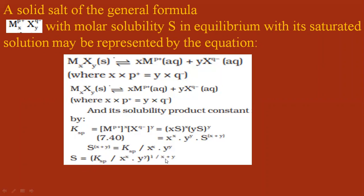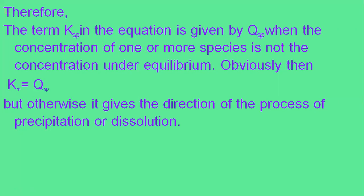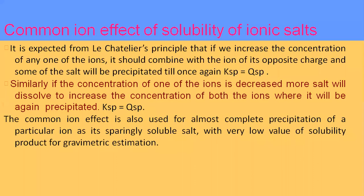When the concentration of one or more species is not at equilibrium, Ksp equals Qsp — where K is the solubility product constant and Q is the reaction quotient, a concept from previous topics. The comparison of Ksp and Qsp gives the direction of the process: whether precipitation or dissolution will occur.